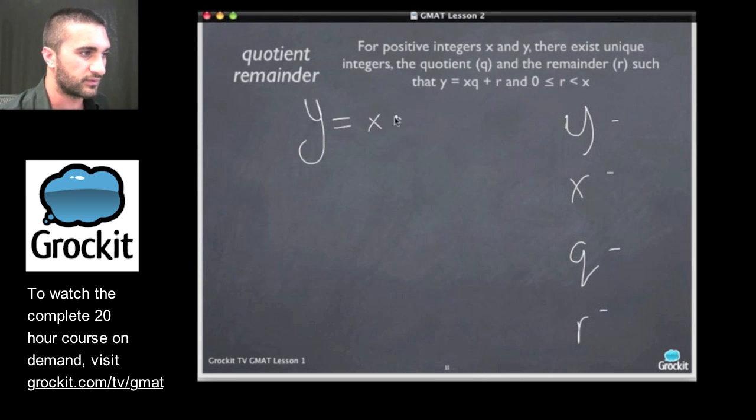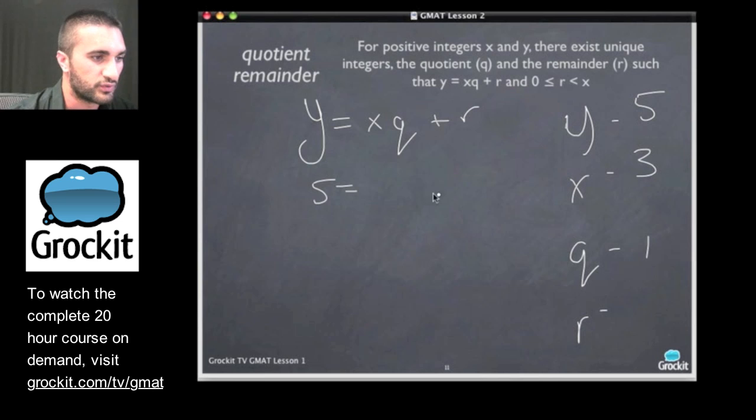We have y equals xq plus r. Great. So let's say that y is five, x is three. So we get five, and we said q was one before. So we have three times one plus r. We get five equals three plus r. If we subtract three from each side, we get a remainder of two.